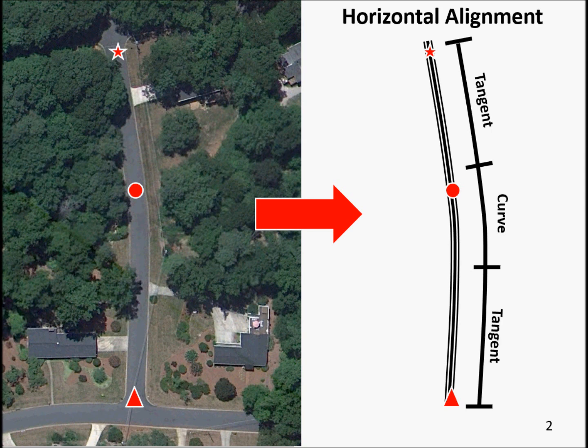The overhead aerial view of the roadway is shown on the left, and the simplified roadway alignment is shown on the right. Each end of the roadway is a tangent, and they are connected with a horizontal curve. We'll see how pavement cross slopes are related to these horizontal alignment elements. In the horizontal perspective, a roadway is primarily comprised of tangent or straight sections, which are smoothly connected by curves.